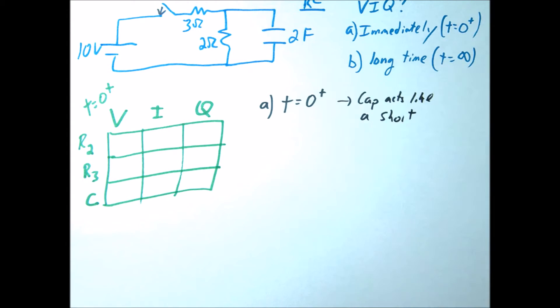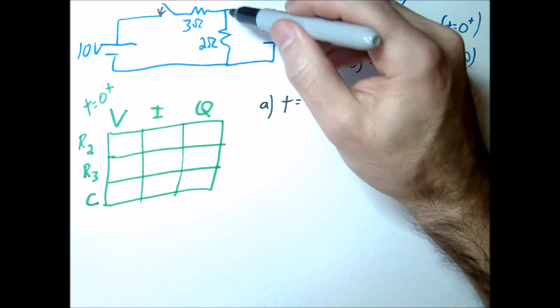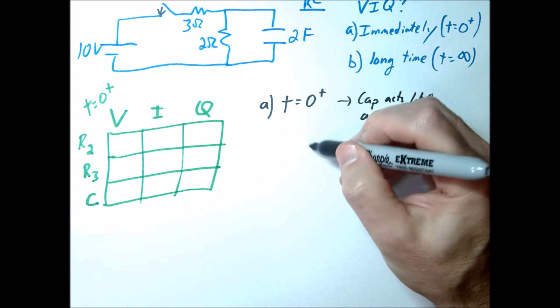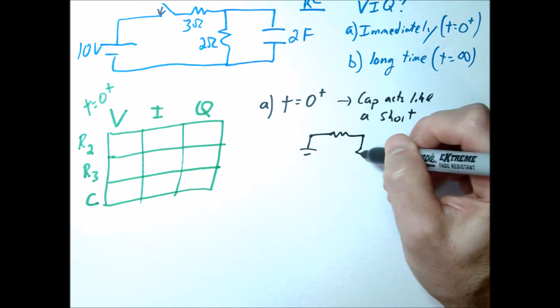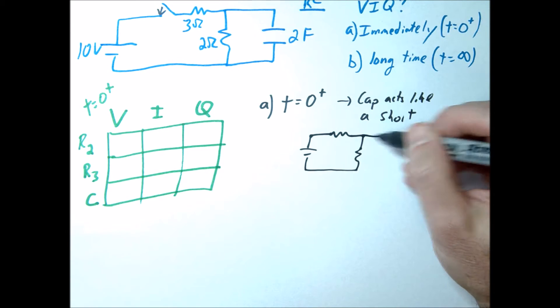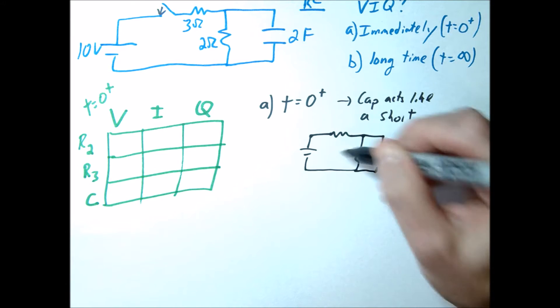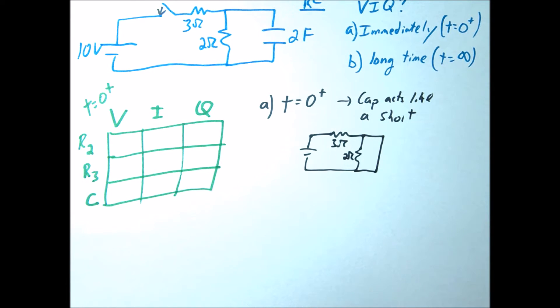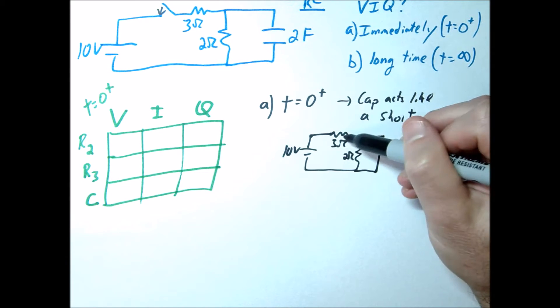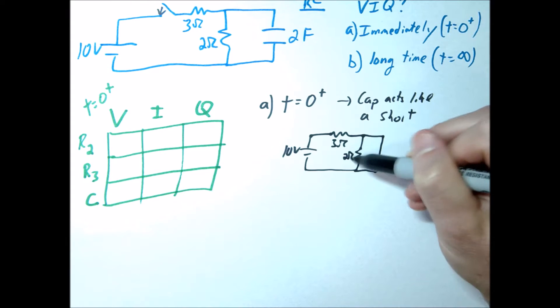All right, so let's go ahead and redraw this circuit. So essentially, it's going to look like this. You're going to have your 10 volt, your 3 ohm, 2 ohm, and then this is going to be a short circuit right here. And in fact, because this is a short circuit, all the current is going to bypass that 2 ohm resistor.